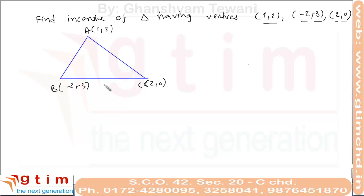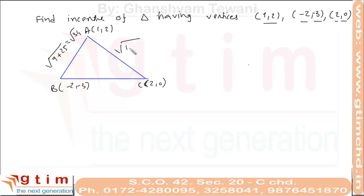To find the incenter, we first compute side lengths. One side length is √(9+25) = √34, another is √(1+4) = √5, and the third is √(16+9) = 5.